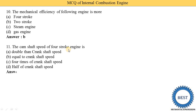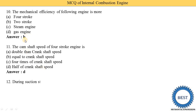Next MCQ: the camshaft speed of a four-stroke engine is — option A: double the crankshaft speed, option B: equal to crankshaft speed, option C: four times crankshaft speed, option D: half the crankshaft speed. The correct answer is D — the camshaft is rotated at half the speed of the crankshaft. For example, if the crankshaft rotates at 1000 rpm, the camshaft rotates at 500 rpm. The camshaft operates the inlet and exhaust valves.